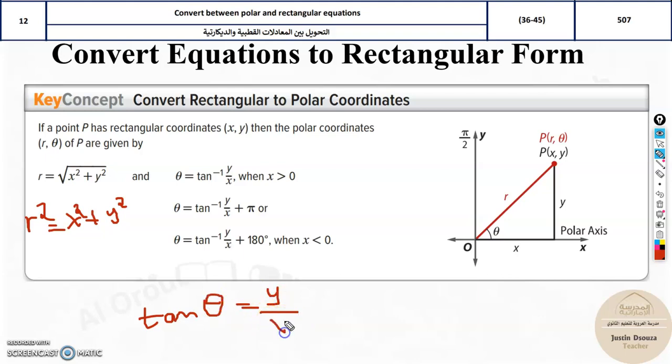These are the basic formulas. Now whenever x is greater than 0, this is for coordinates only when the radius and theta is given. If it's greater than 0, it's only this much. If its x value is negative, then we add pi, but now we can ignore that for a while.